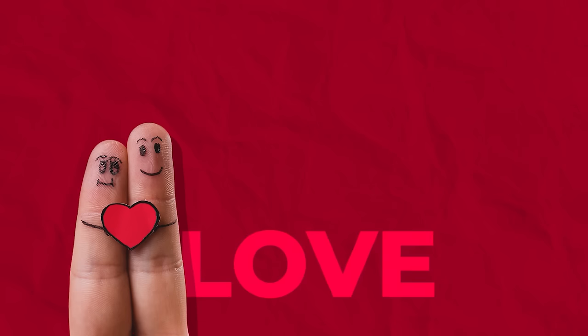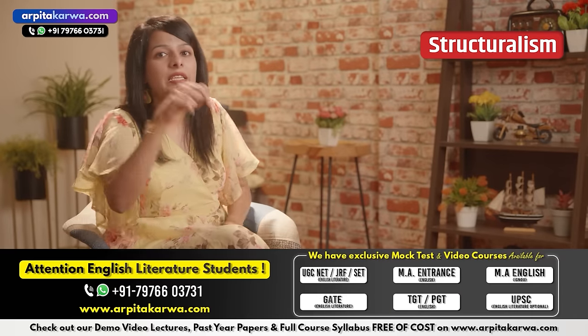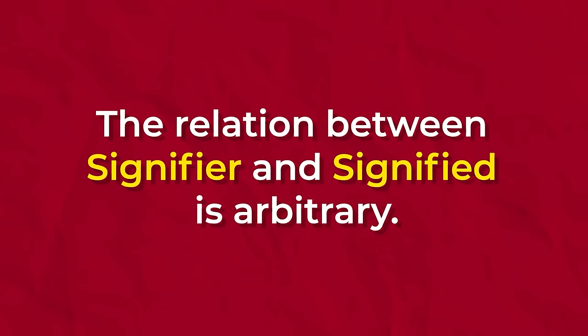If I ask a child to define a dog, he will talk about a four-legged animal who barks and wags his tail — these characteristics are the concept of signified. If we see the color red, it might symbolize love for someone, or danger for someone else. So red is a signifier and the concept that occurs in your brain is the signified. For the same signifier, there can be different signified.